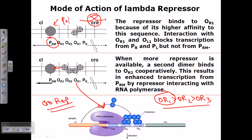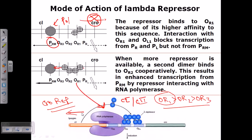The repressors first bind to OR1, then as concentration increases, more repressors bind to OR2, and they attach to RNA polymerase, telling it to act properly. The interaction of OR1 and OR2 with the Cro proteins requires the presence of another important protein called CI. Both CI and CII proteins are required to enhance the activity of the repressor to finally promote the lysogenic cycle.